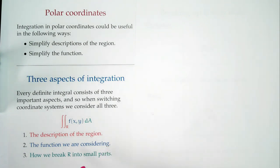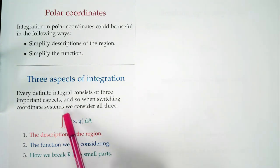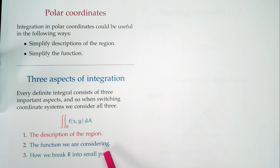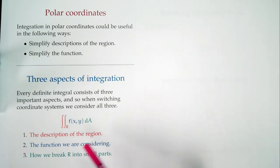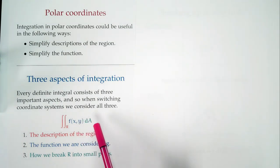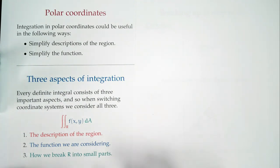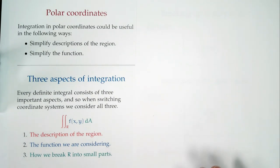Every definite integral has three important things. First: where's our region? That's described in the bounds. Second: what's the function we're integrating? Third: how do we break R into small parts? That's indicated by dA. Integration says: take what we're looking for, break things into small pieces, and understand each piece.